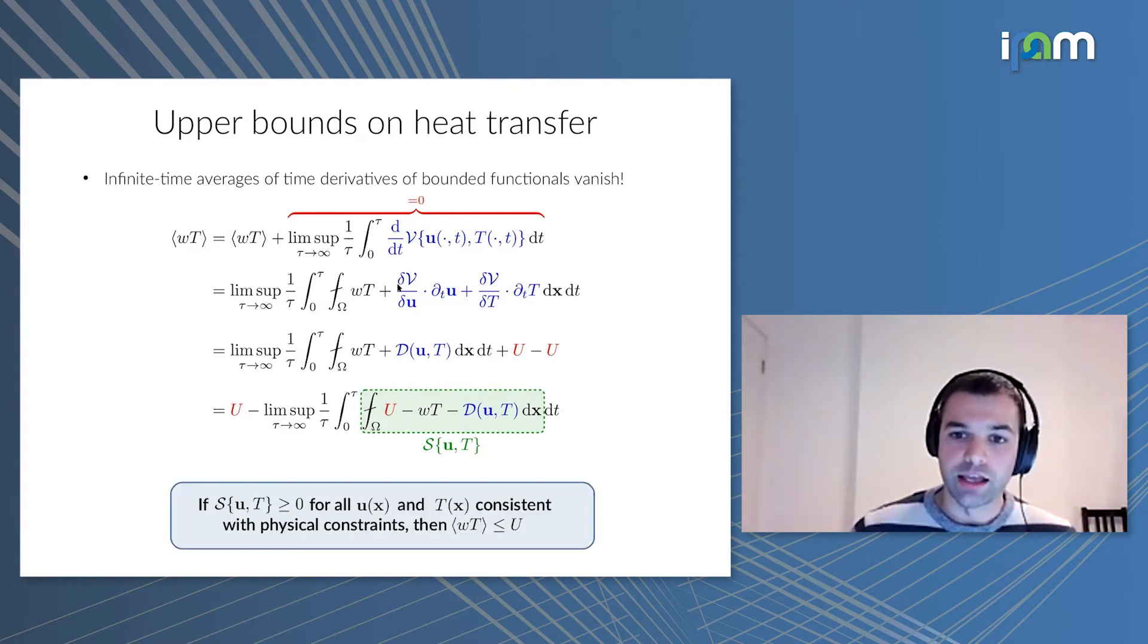Now perhaps I can choose this v that I had at the beginning, and this constant u such that this quantity s is non-negative no matter what the velocity or temperature is, provided they satisfy physical constraints like boundary conditions or incompressibility. If I do this, then this time average is certainly positive, or at least less than or equal to zero, and so the heat flux equals u minus something positive, and therefore it's less than u. So I immediately obtain an upper bound.